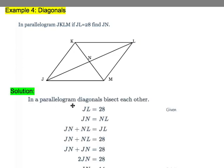So because diagonals bisect each other, we're given that JL is equal to 28. We know that JN and NL are equal. And we also know that JN plus NL equals JL.